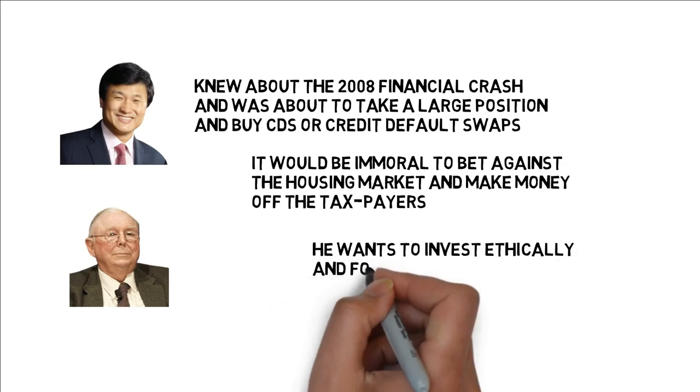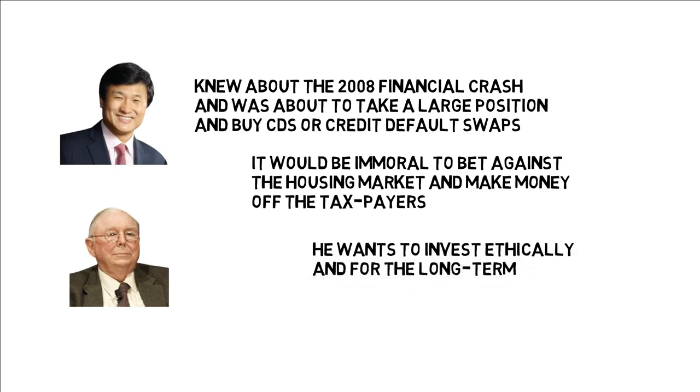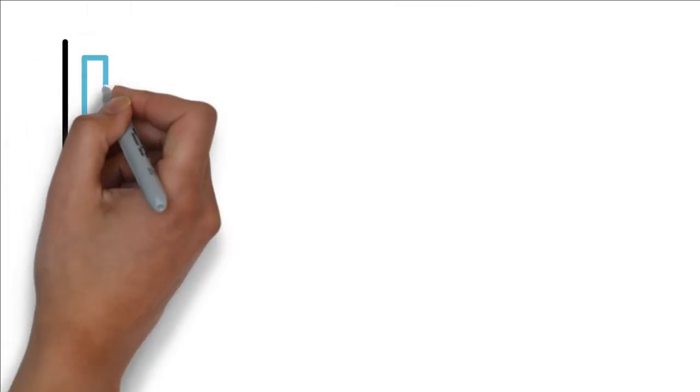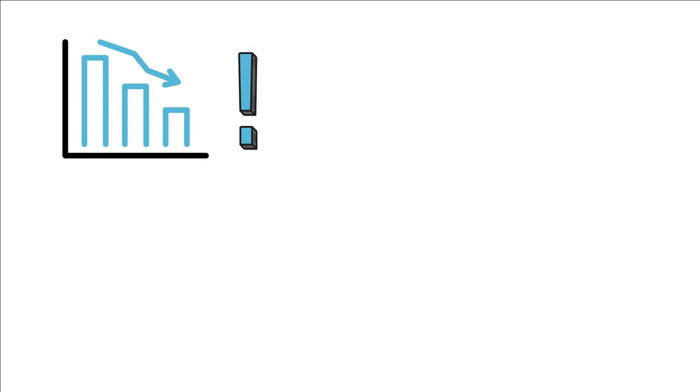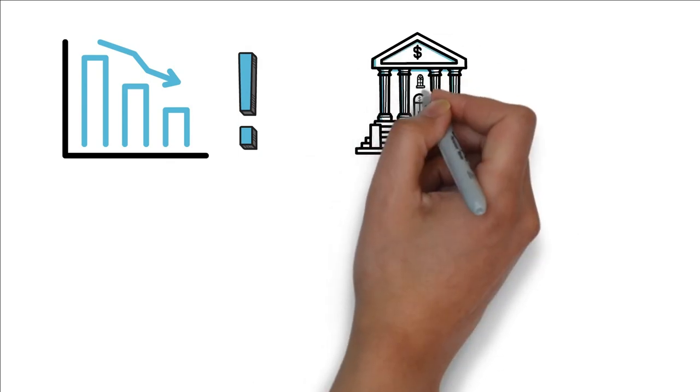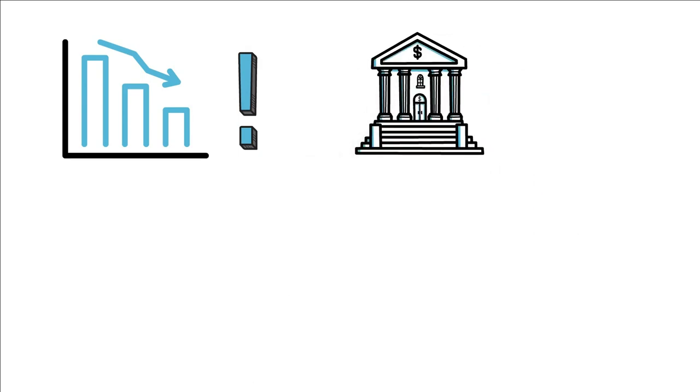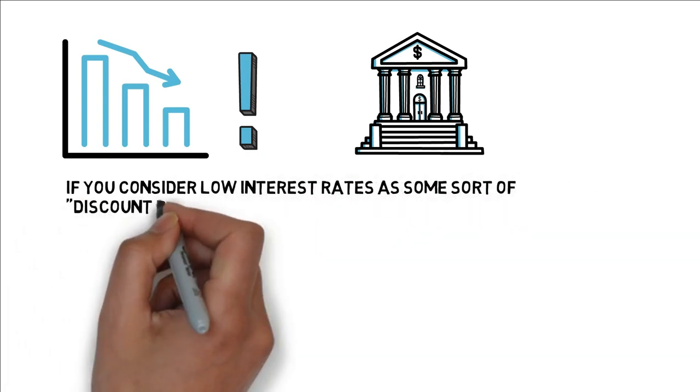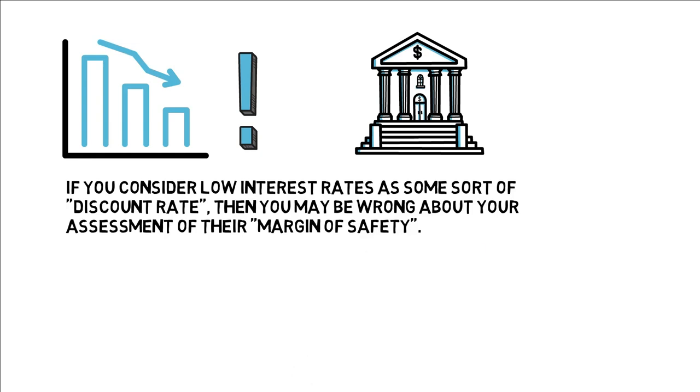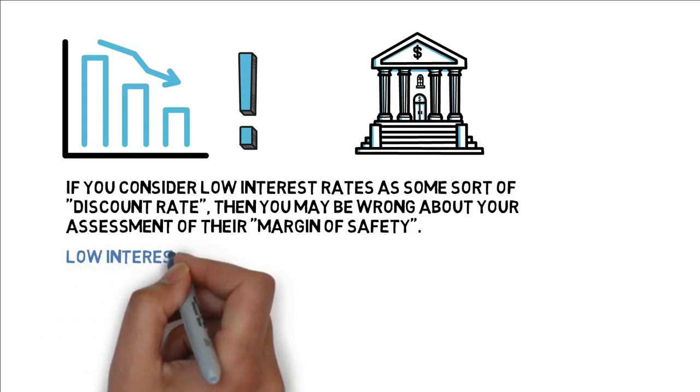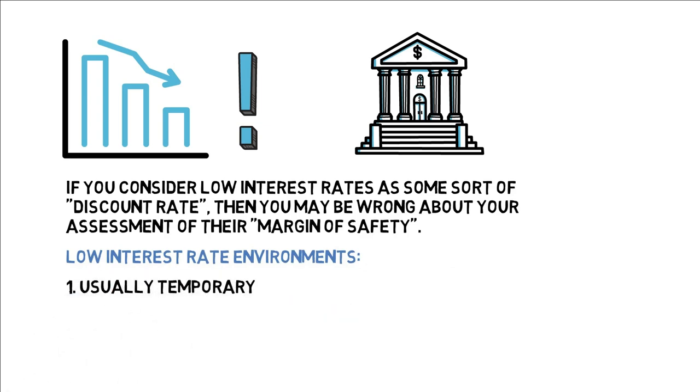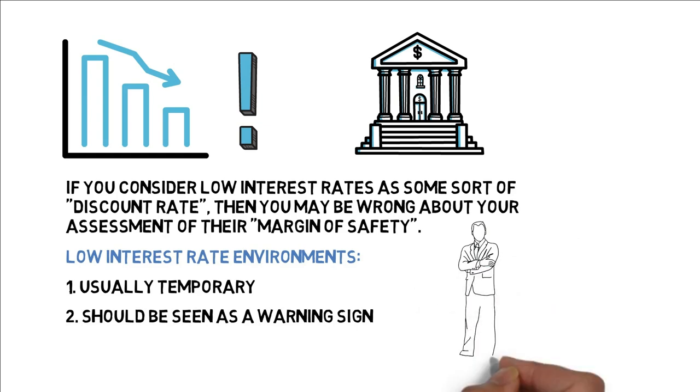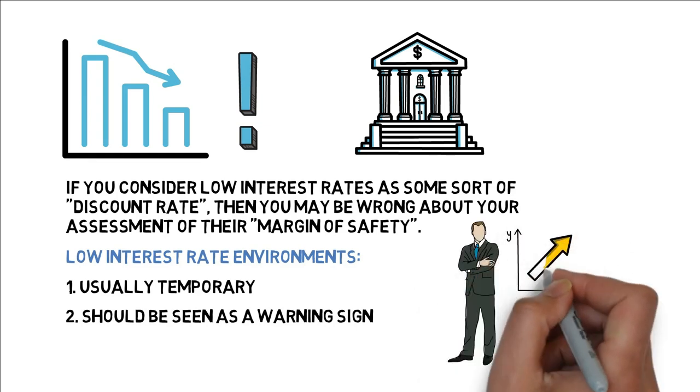It's clear that he wants to invest ethically and for the long term. Leeloo stated that low interest rate environments are historically rare. However, it is even rarer when all major countries around the world are doing the same QE slash low interest rate central bank policy. If you consider low interest rates as some sort of discount rate, then you may be wrong about your assessment of their margin of safety. Low interest rate environments are usually temporary and should be seen as a warning sign because they don't prevent the economy from getting worse. In low interest rate environments, investors should set their margin of safety requirements higher, not lower.